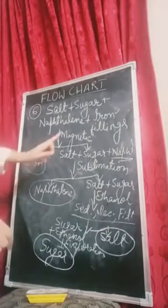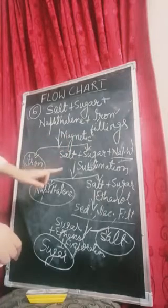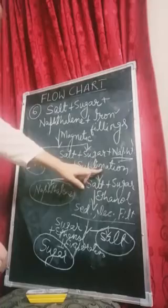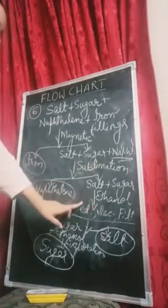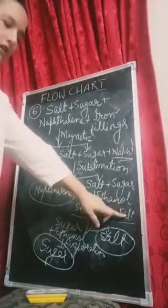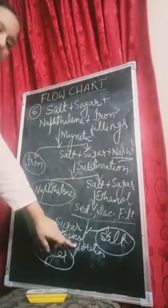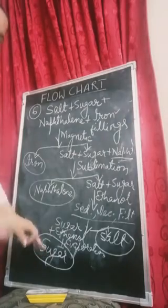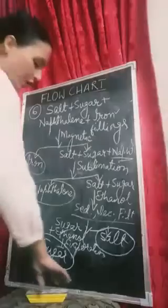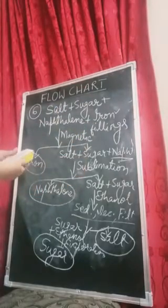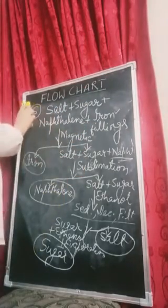So iron is separated by magnetic separation, naphthalene is separated by sublimation, salt is separated by sedimentation, decantation, and filtration. Sugar and ethanol were left behind, then evaporation separates the sugar. This is how we create a flow chart and use different methods and orders for separating the components of a mixture.